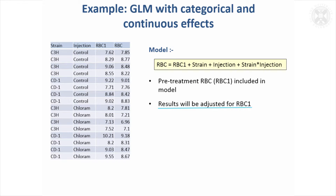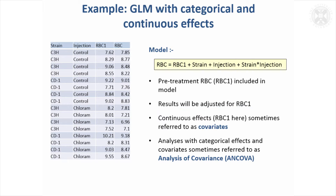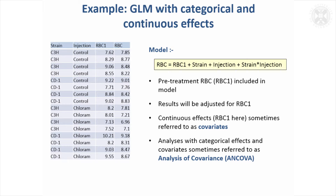Fitting red blood cell count before treatment allows the results to be adjusted for any differences in it between the groups. A couple of notes: when putting continuous effects into the model like this, they are called covariates rather than factors. Occasionally you'll hear people talk about analysis of covariance — all that means is there's a covariate in the model. It's basically just a general linear model, but sometimes people call it analysis of covariance.